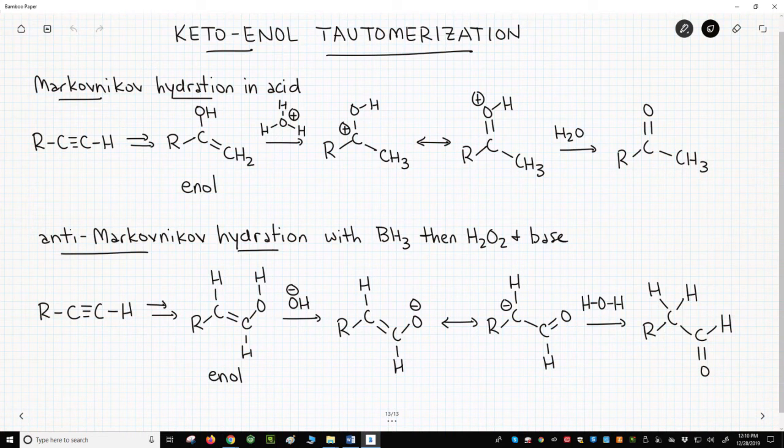One video formed the enol under acidic conditions. The other formed the enol under basic conditions. In both cases, we got the carbonyl keto form. The keto-enol tautomerization happens readily in either acid or base. Let's look at both mechanisms.